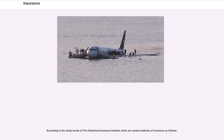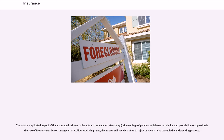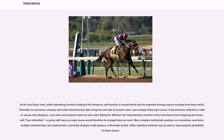According to the study books of the Chartered Insurance Institute, the business model is to collect more in premium and investment income than is paid out in losses, and to also offer a competitive price which consumers will accept. Insurers make money in two ways. The most complicated aspect of the insurance business is the actuarial science of rate-making — price-setting of policies — which uses statistics and probability to approximate the likelihood of future claims based on a given risk. After producing rates, the insurer will use discretion to reject or accept risks through the underwriting process. At the most basic level, initial rate-making involves looking at the frequency and severity of insured perils and the expected average payout resulting from these perils.